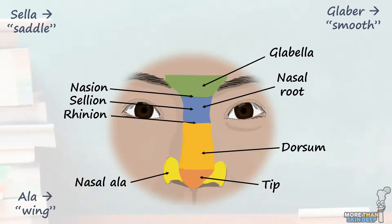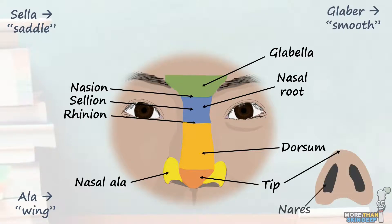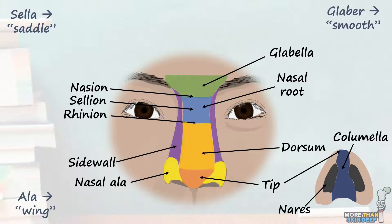If we put our finger back on the tip of the nose and instead move inferiorly, we'll come to a band of tissue that runs directly between the nares, separating them in the midline. This is known as the columella, due to its column-like shape. The last part of the nose we should be aware of are the two nasal side walls, which form the sides of the nose from the start of the eyebrows to the start of the ala. The part where the nasal side wall merges with the medial cheek is known as the nasofacial sulcus, and the part where the ala join the cheek is the alar facial sulcus.